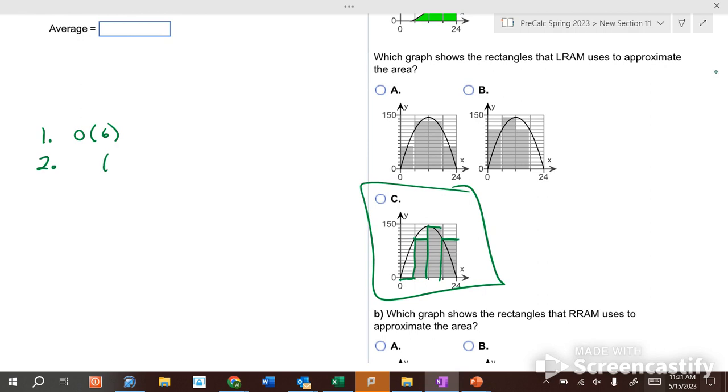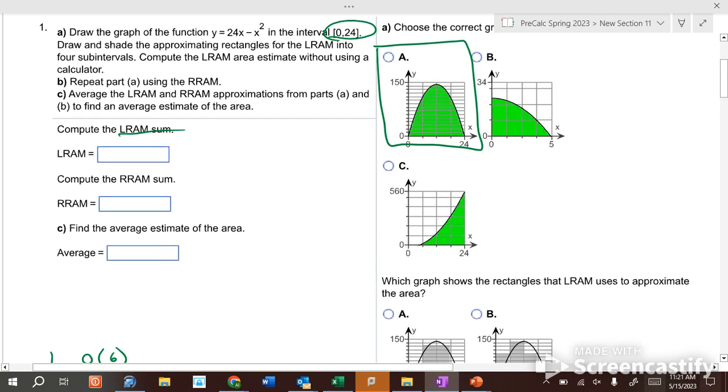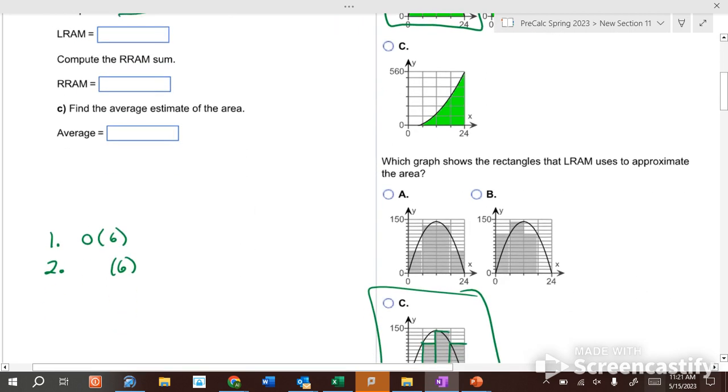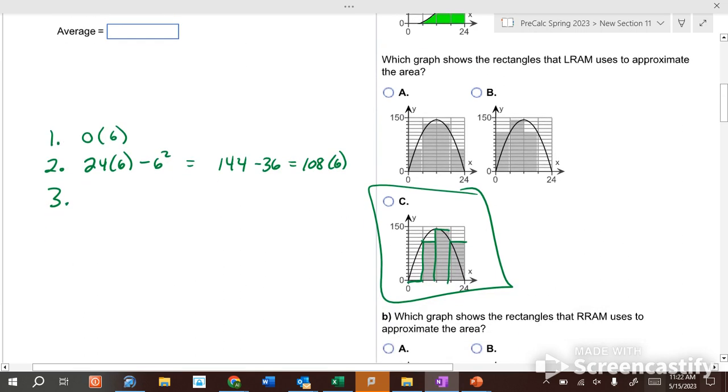The second rectangle has a width of six. How do we find the height? Plug six into this function. Take 24 times six minus six squared, which equals 144 minus 36, which is 108 times six. The third rectangle: 24 times 12 minus 12 squared. 24 times 12 is 288 minus 144 is 144 times six.